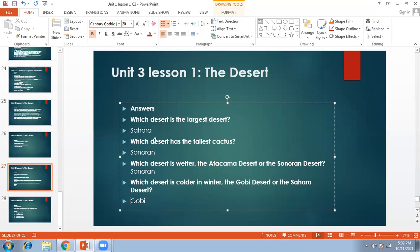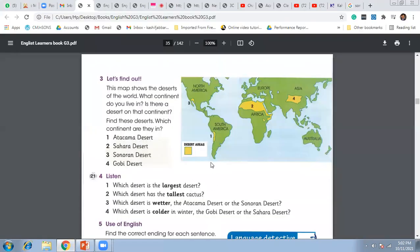All right, so this is the answer to question number four. Do it in your book. You have some place here. As we did during the class, you can write the answer. Here it is, Sahara. It is the tallest cactus. Where does it grow? It's in Sonoran. Let me do it for you. I think it will become easy for you.